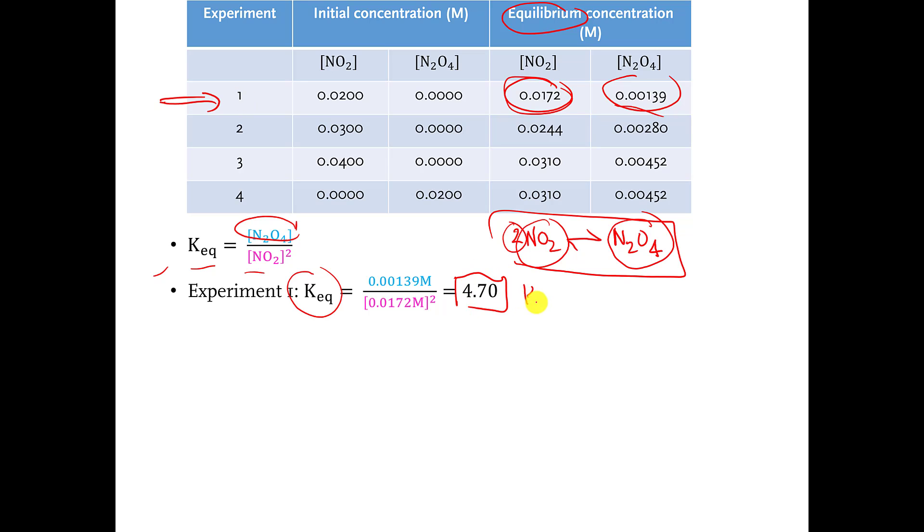And what that means, if you remember from the previous video, the equilibrium constant in this case is bigger than 1. That means the numerator is winning compared to the denominator. That means the right side of the reaction is winning compared to the left side. So you would say this reaction favors products.